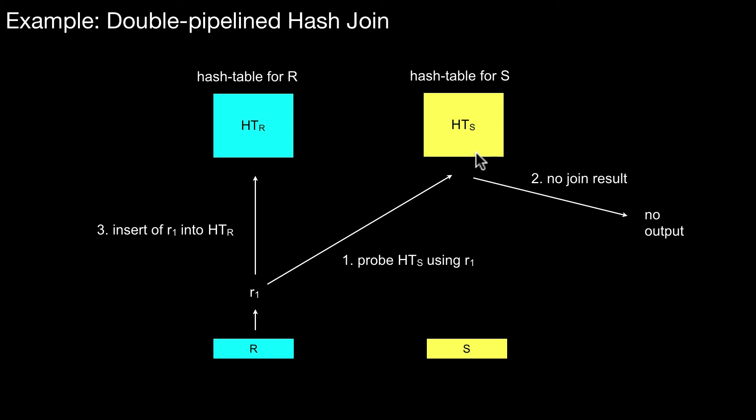I explained it using hash tables. However, the same algorithm works perfectly fine for any index structure that is suitable for the equi join. It could be a btree. It could be any index structure that allows you to get all the tuples from the other relation that have the same join key. It doesn't have to be a hash table.